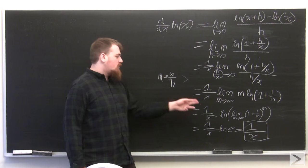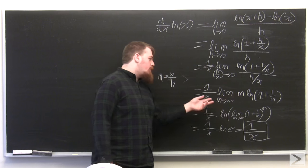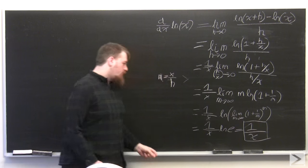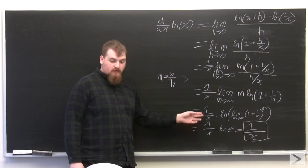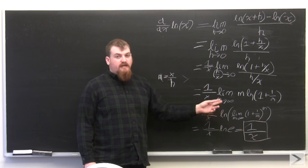This is equal to 1 over x times log of the limit that gives you e, where we pull in this and pull in this using the power rule. This is equal to 1 over x times log of e, and that's equal to 1 over x.